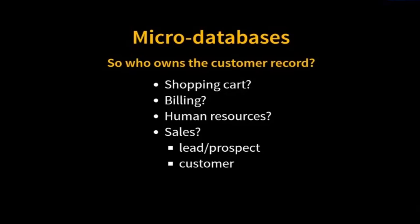All of the other details can be stored in their associated microservices. The shopping cart can store orders or the last known address and all customer details in their own customer profile table. Same thing with billing — the credit card numbers can end up in the billing customer profile, which is different from the shopping cart customer profile. When sales creates a new lead, it may just be the first name, last name, and phone number. When they're ready to convert that lead into a customer, they can call the customer microservice to get the next primary key, creating that account number.